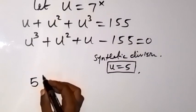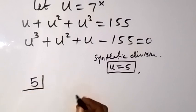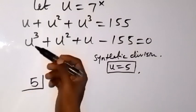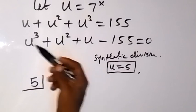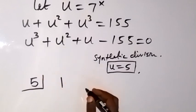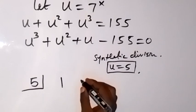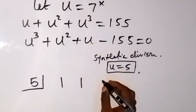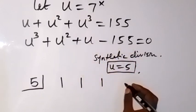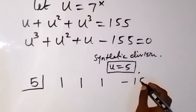We are using 5 to divide. This is how to use synthetic division. The coefficient of u raised to power 3 is 1, the coefficient of u squared is 1, the coefficient of u is 1, and we have the constant minus 155.